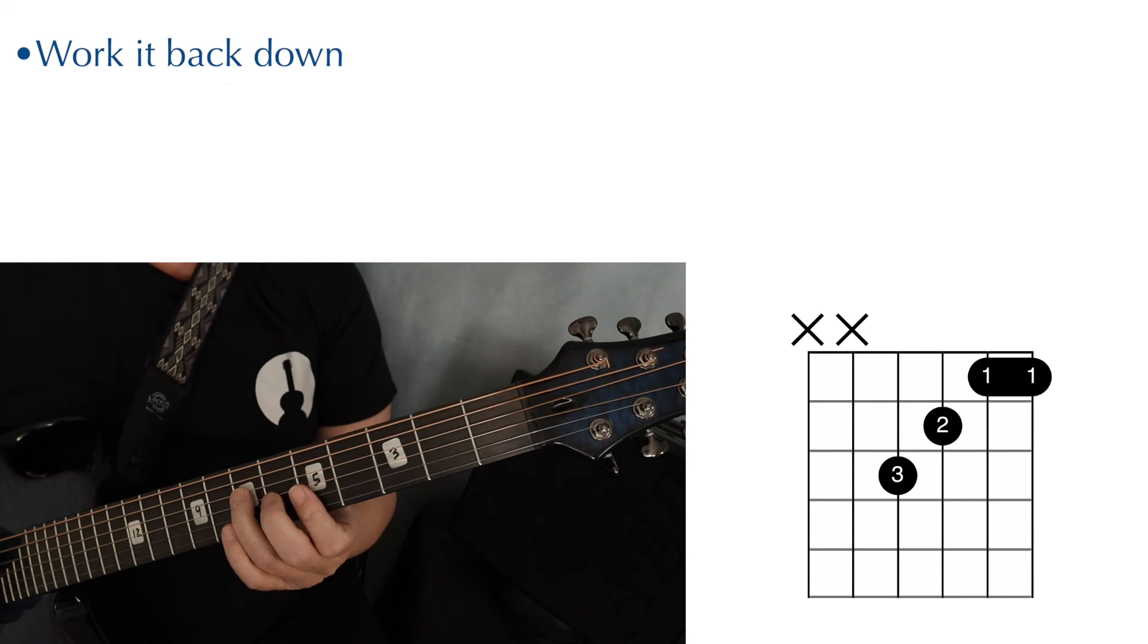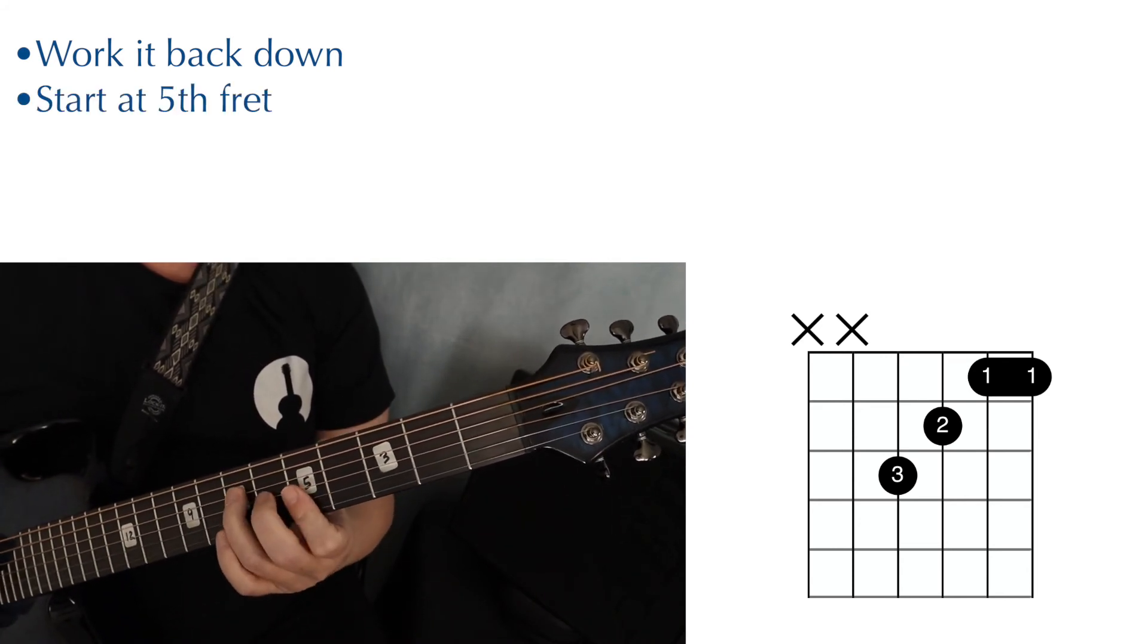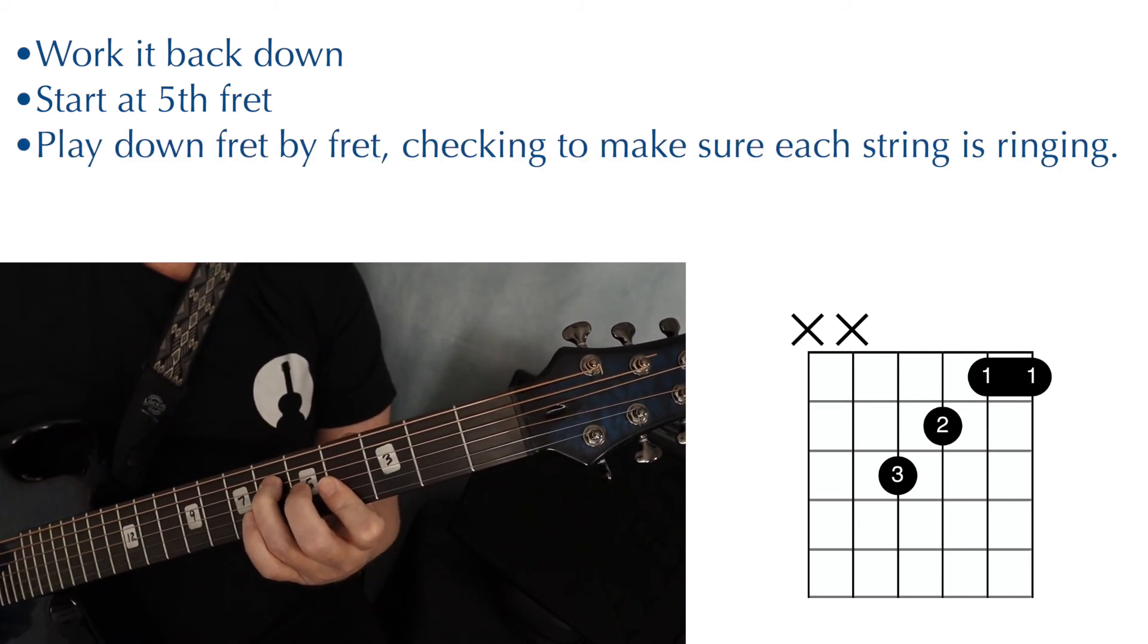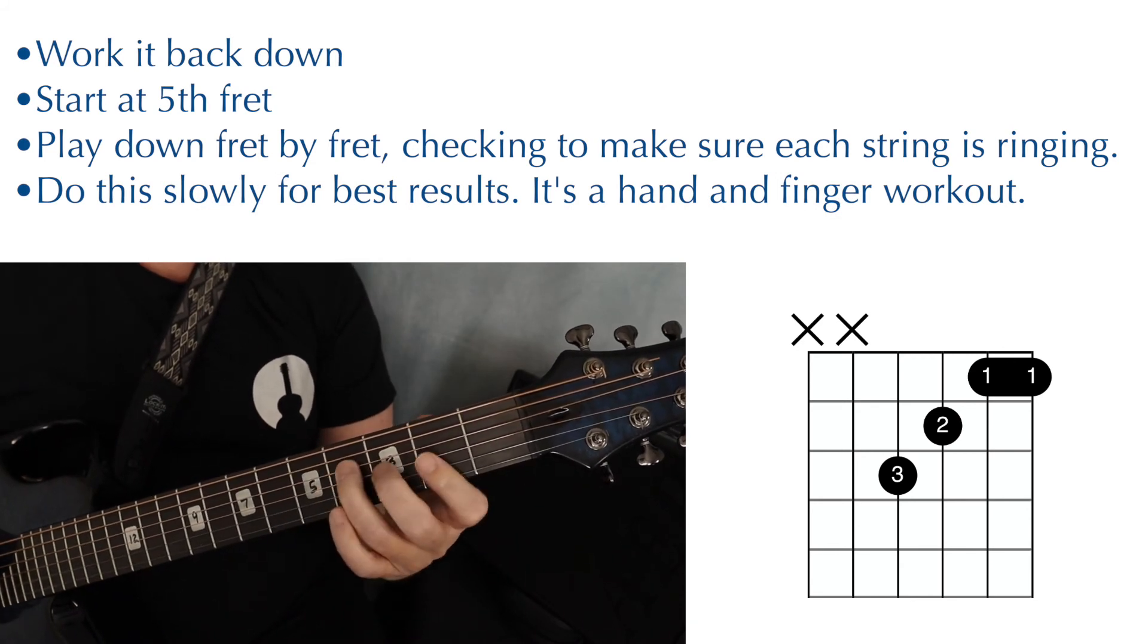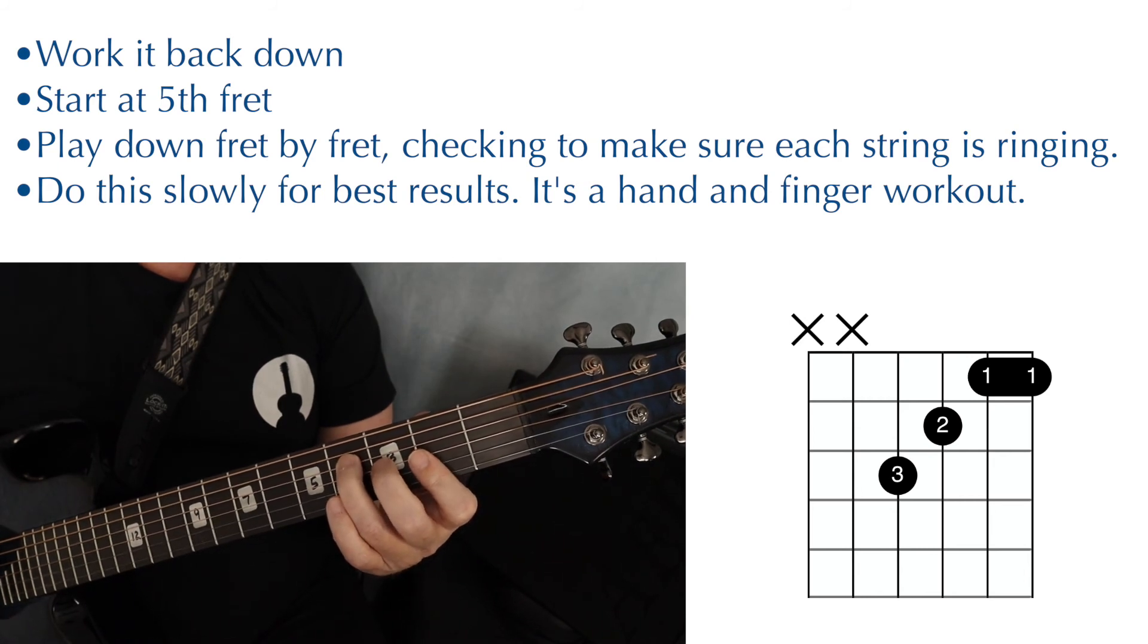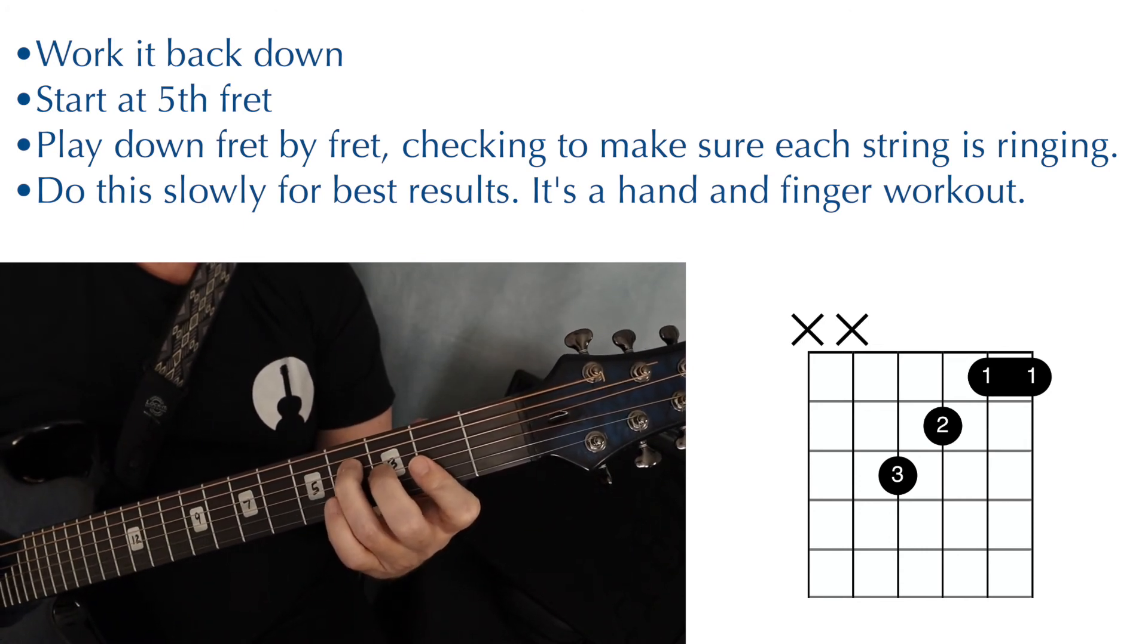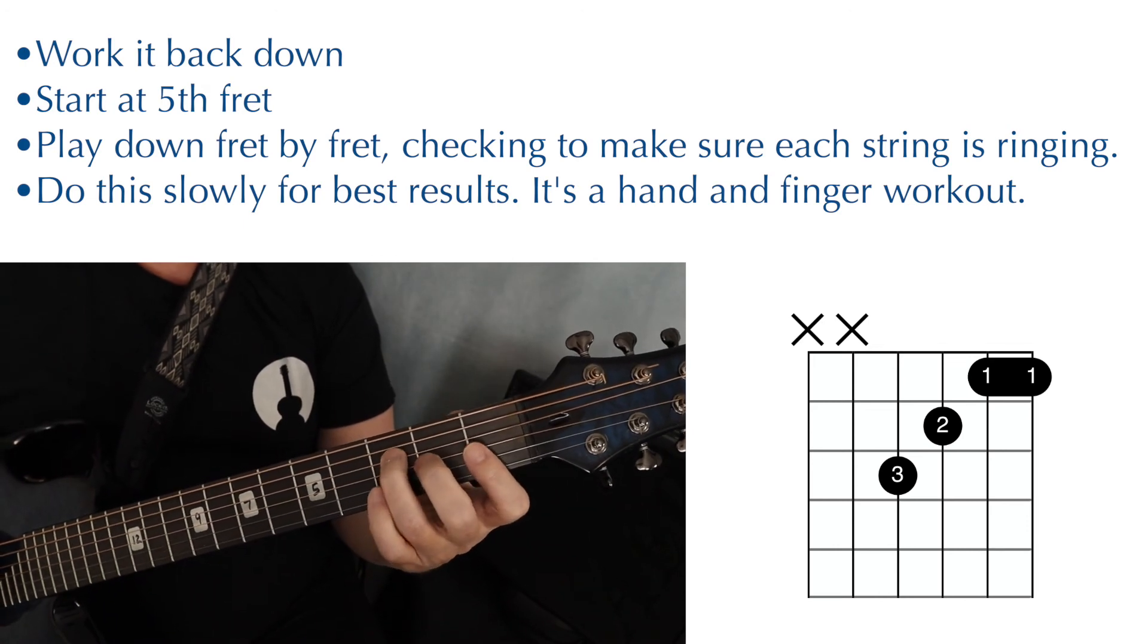And once you can play this chord shape at the fifth fret, it's time to move it down the neck. So start at the fifth fret. Work it down fret by fret until you reach the first fret. And strum each chord slowly to make sure each string is ringing. And if you have trouble somewhere, back it up. Whatever string you have trouble on, stop on that string for a while because the tension does get higher as you work your way toward the first fret.